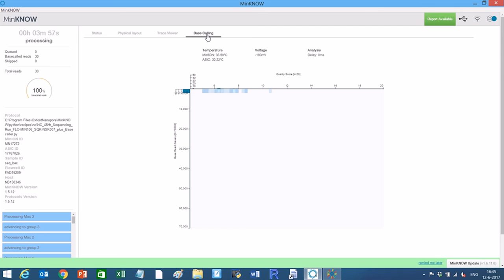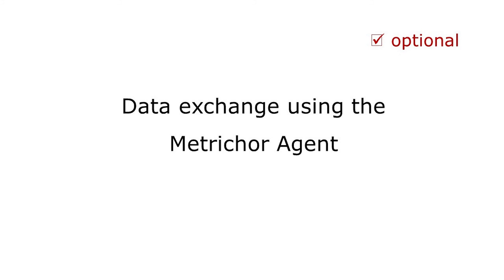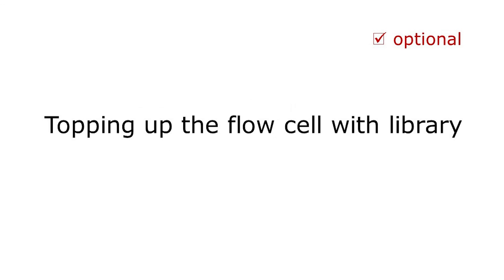The data is stored in a computer that is connected to MinION. If necessary, the following two steps can be performed: data exchange using the Metricor agent, topping up the flow cell with library, and completing the experiment.